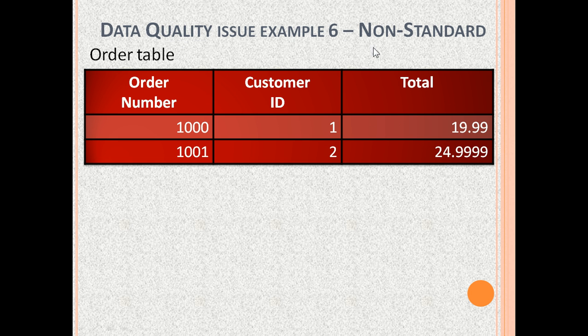The sixth data quality issue is non-standard. Here is the order table with columns: order number, customer ID and total. In the second row, the total has four places after the decimal point, so it is in a non-standard format.